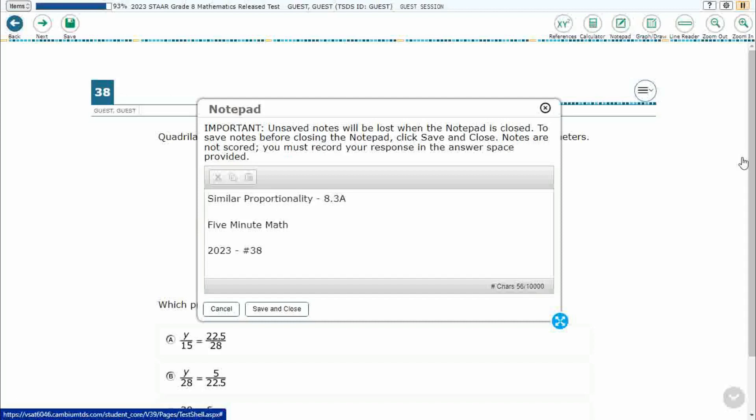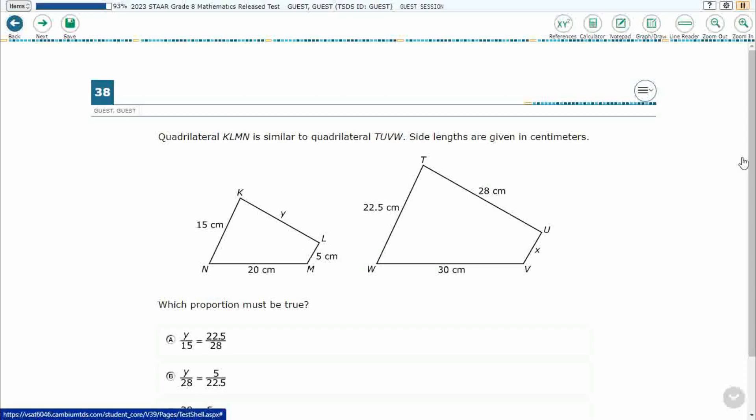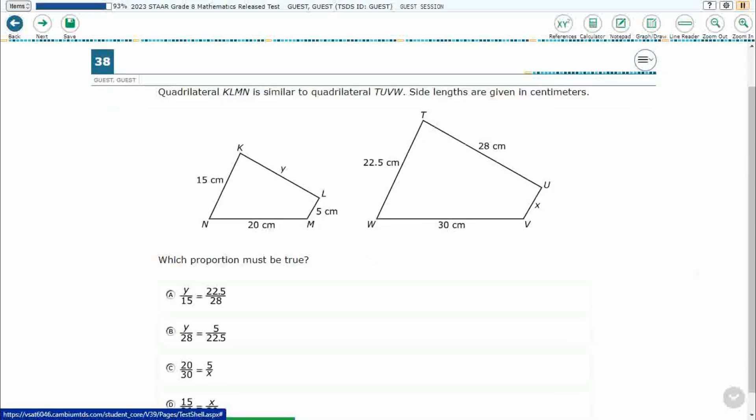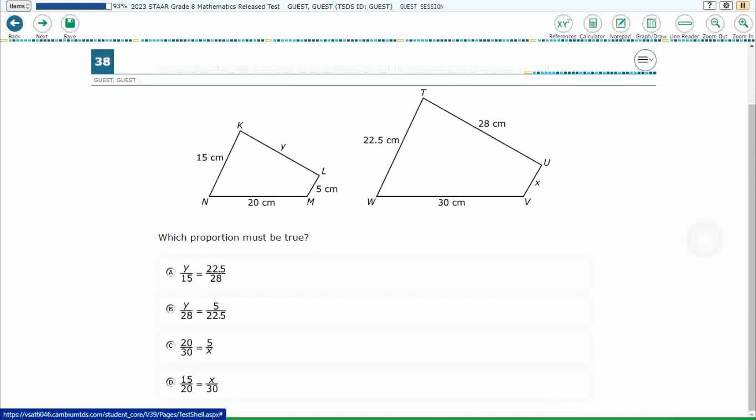Hello and welcome to 5-Minute Math. Today we are looking at the 8th grade concept of Similar Proportionality. This is standard 8.3a in the great state of Texas, and we are using item number 38 of the 2023 released STAAR test. If you haven't done so already, please pause the video, work this problem out on your own, then unpause it and we will look at our answers together.